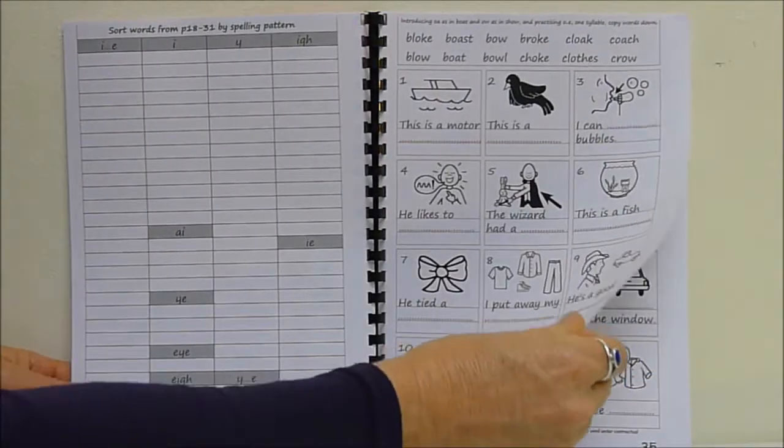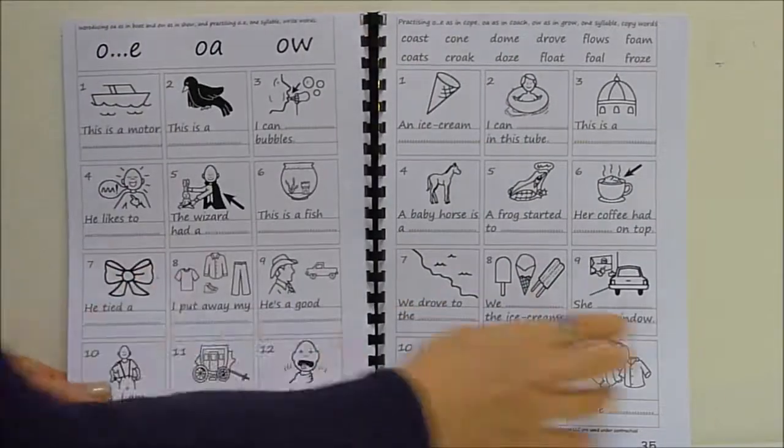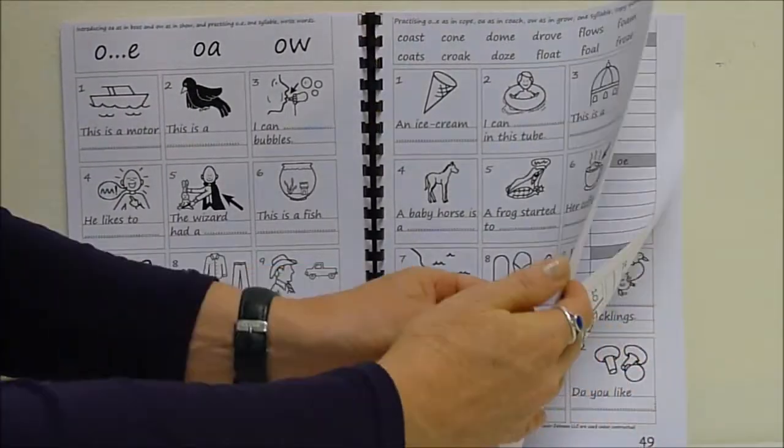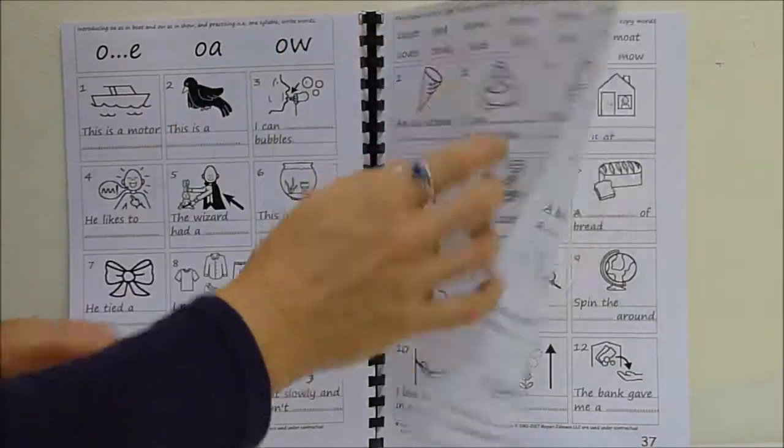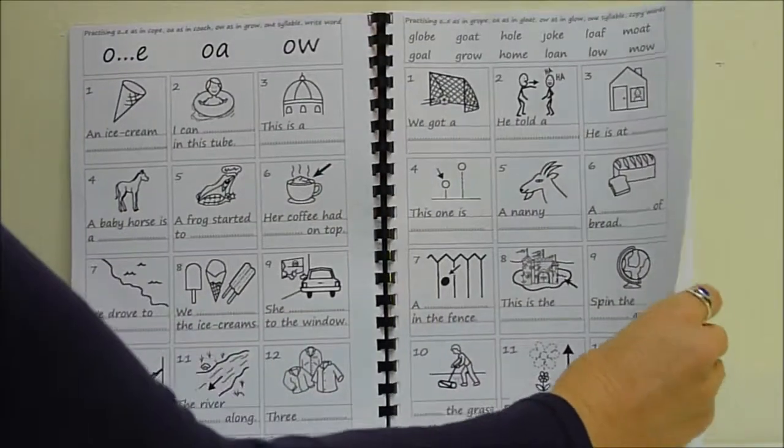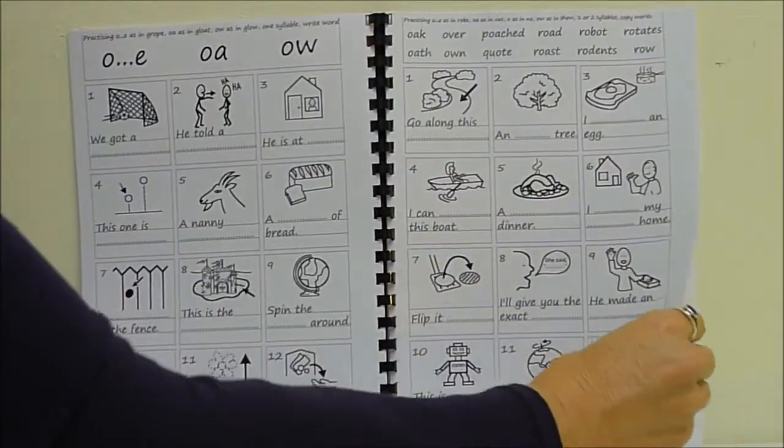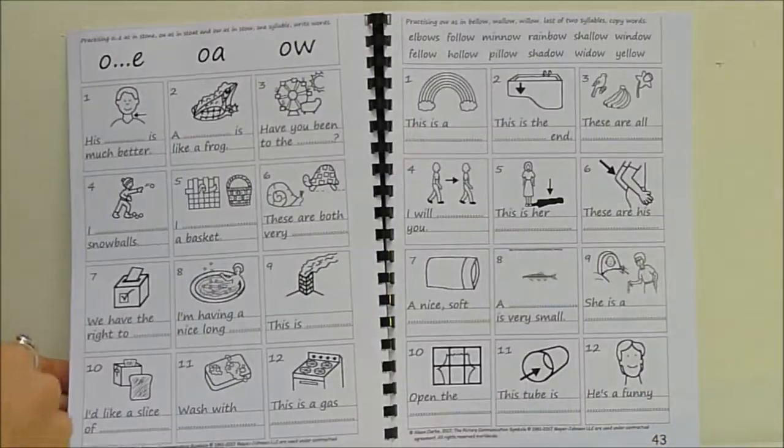And then move on to the next vowel is O. Bloke, boast, blow, broke, cloak, coast, cone, dome, drove, flows. So we've got three main spellings here. This one is the ending one. And globe, goat, hole, joke, loaf, oak, over, poached, row, and show, smoke, soap.